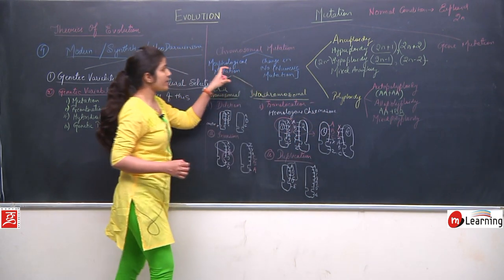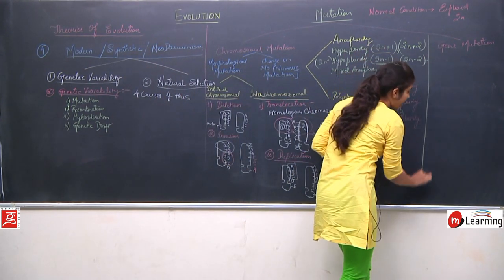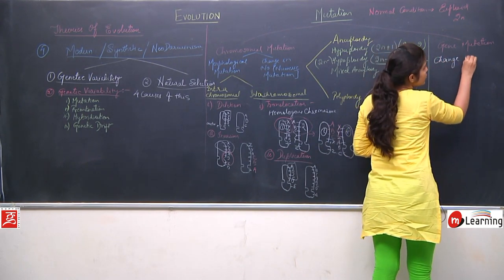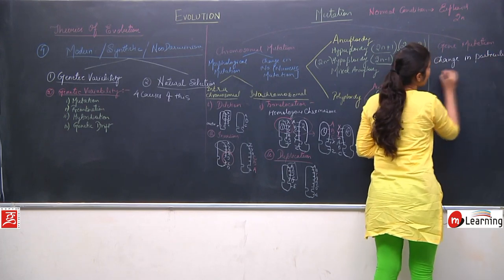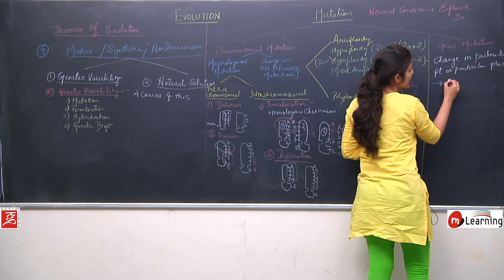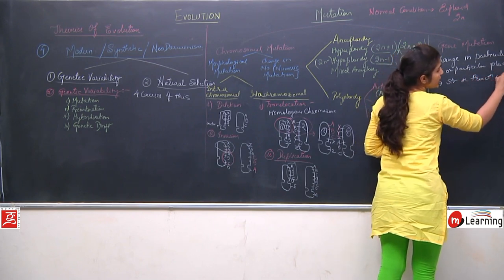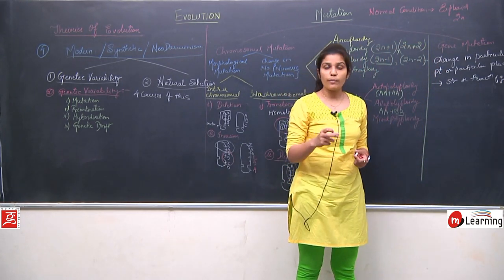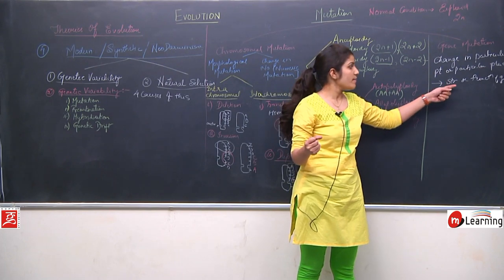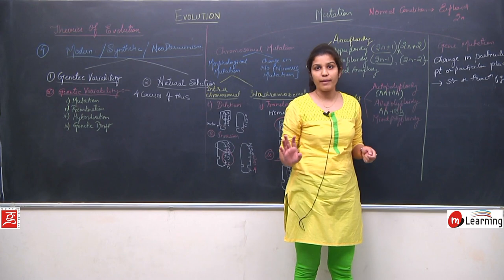This was all about chromosomal mutation. Now we discuss the second category: gene mutation. When there is a change at a particular point or place in the gene, it leads to a change in the structure or function of the gene — this is called gene mutation. The change at a particular gene point changes both its structure and function.